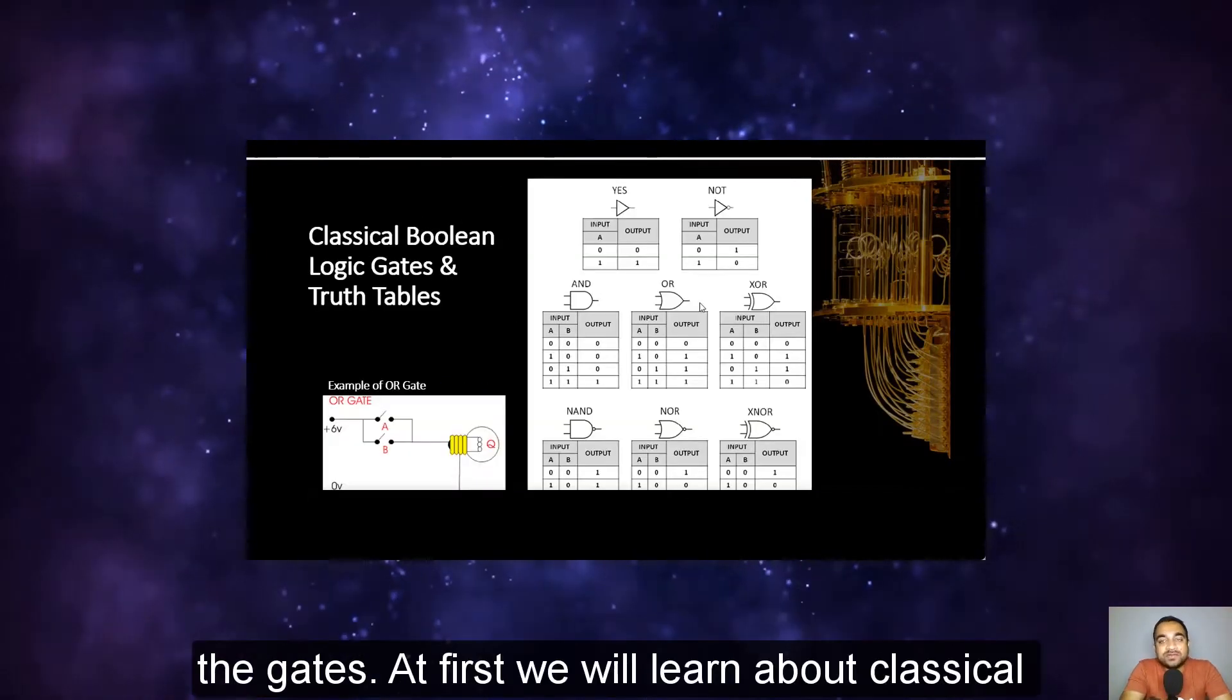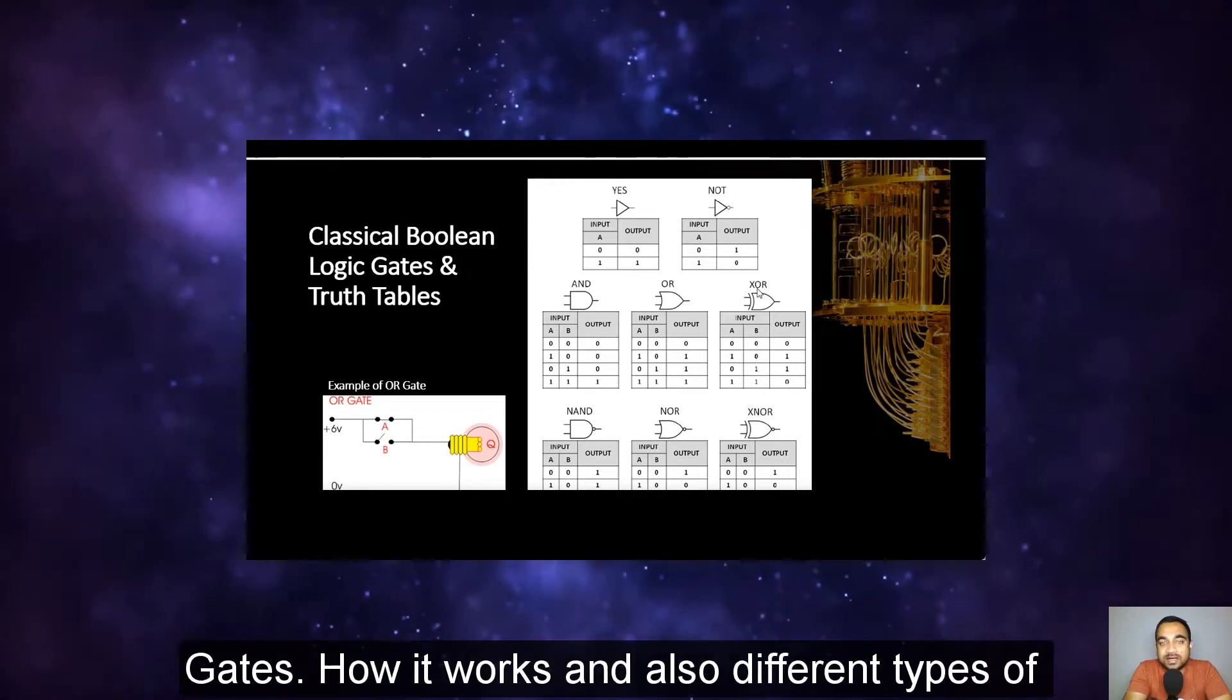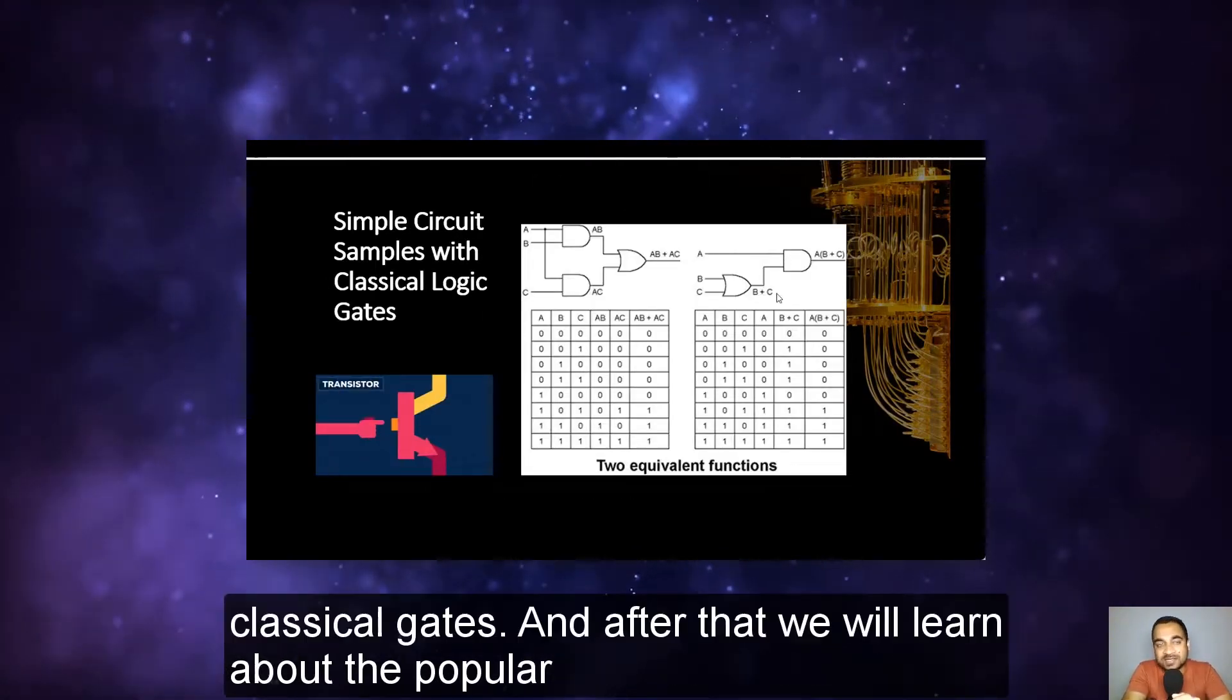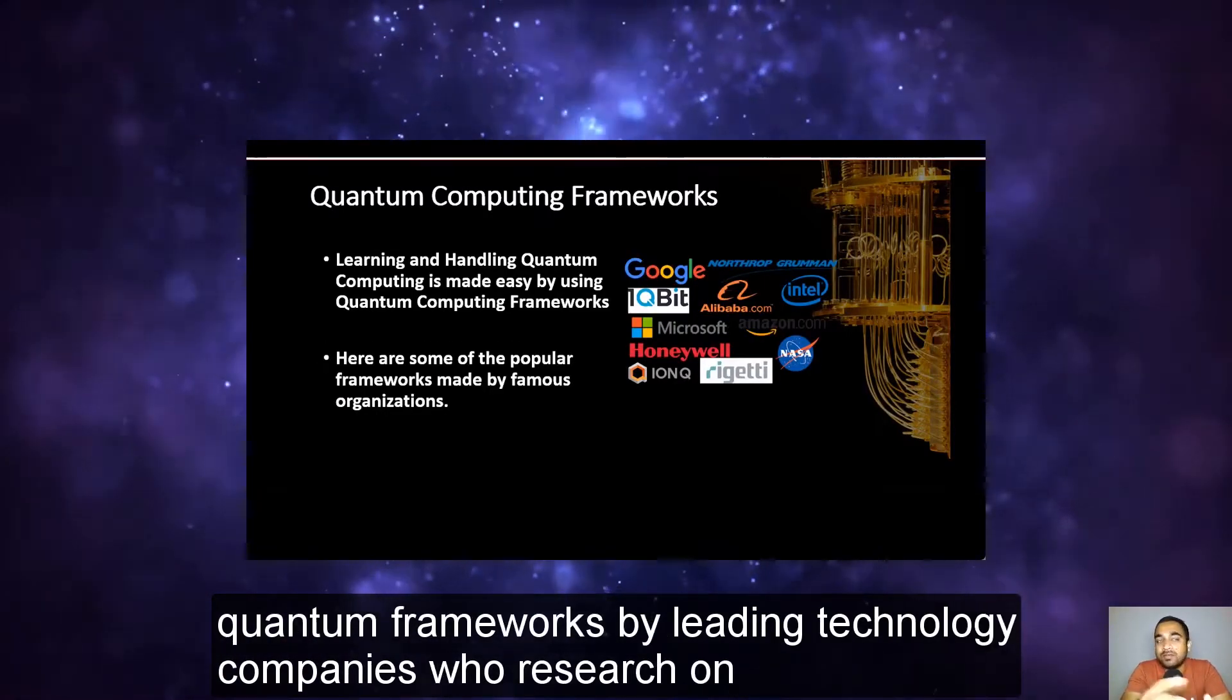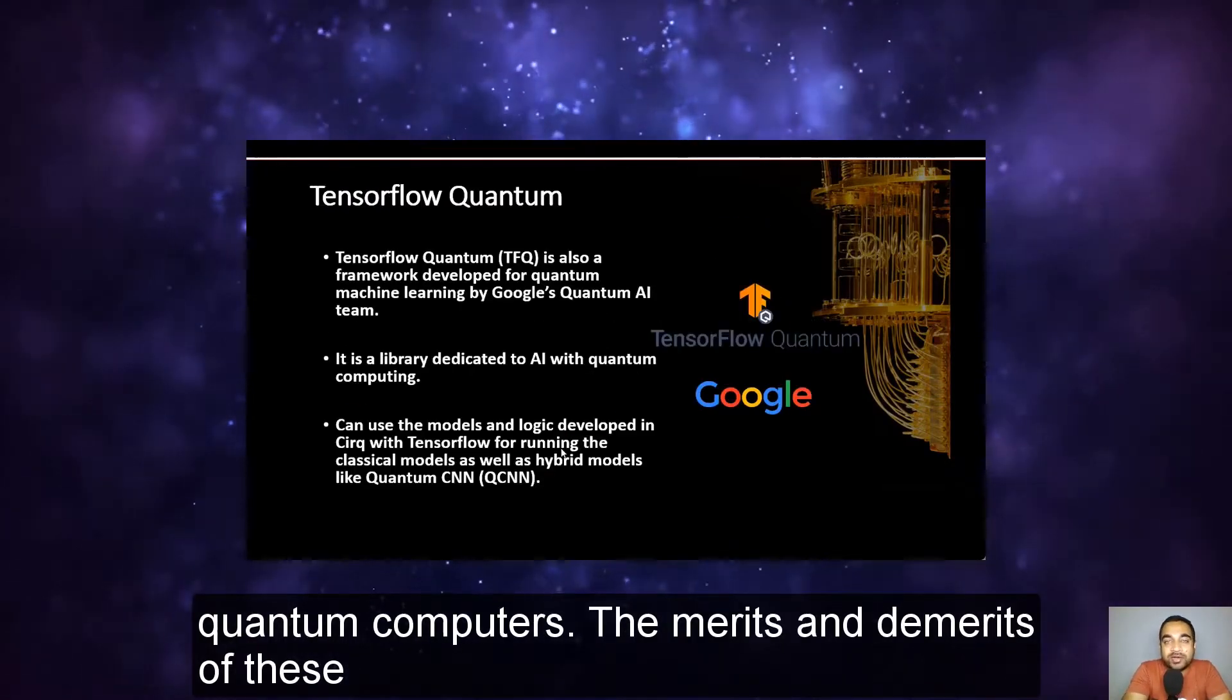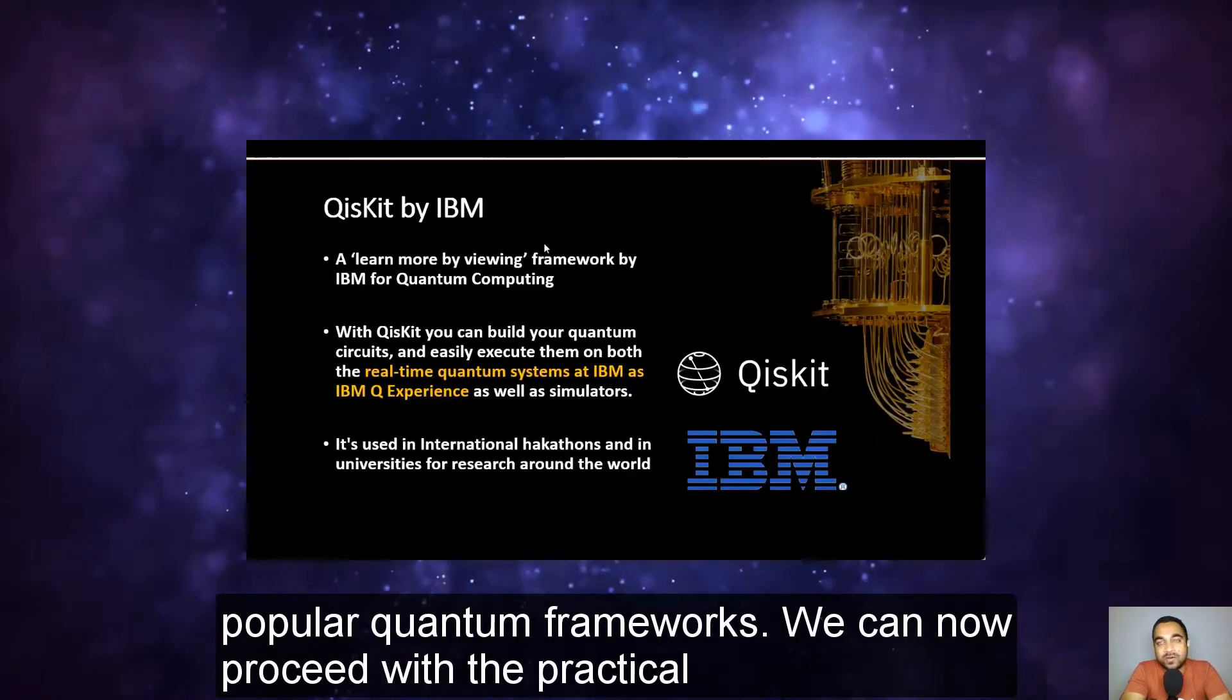Now we can proceed with the gates. At first we will learn about classical gates, how it works, and also different types of classical gates. And after that we will learn about the popular quantum frameworks. We will start by leading technology companies who research on quantum computers, the merits and demerits of these popular quantum frameworks.